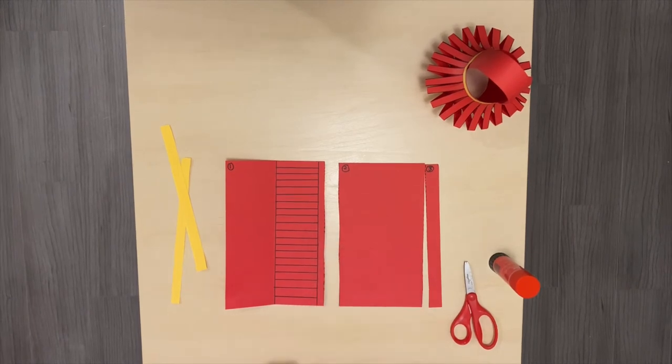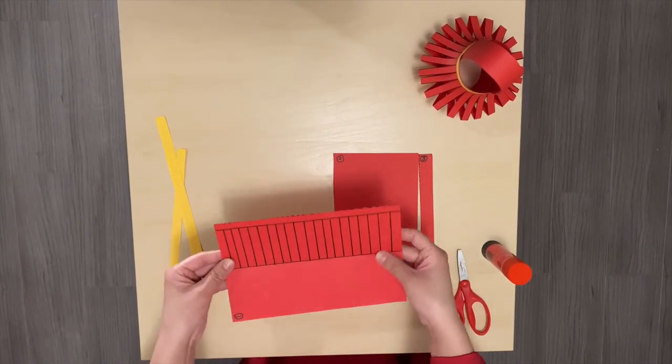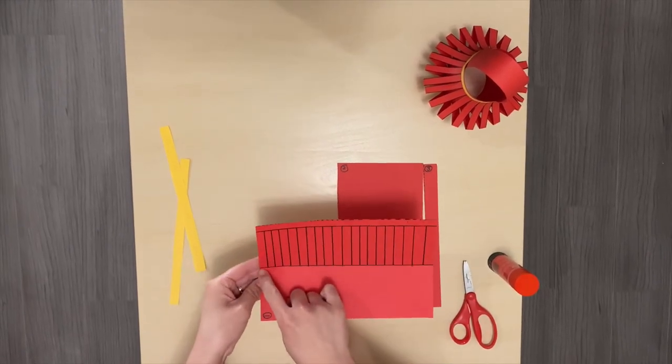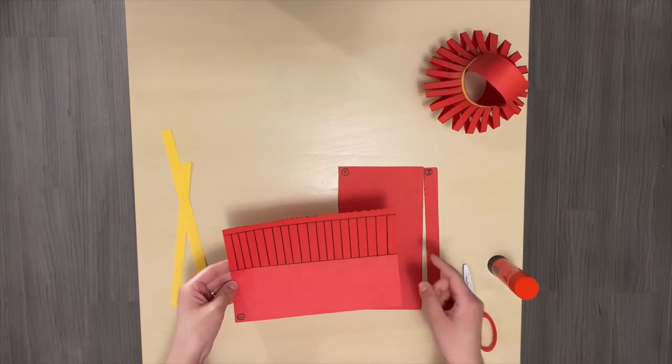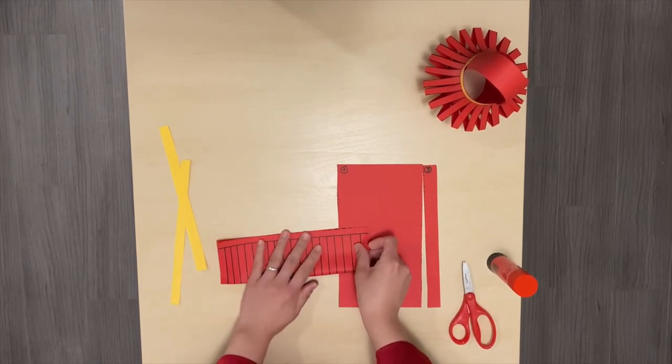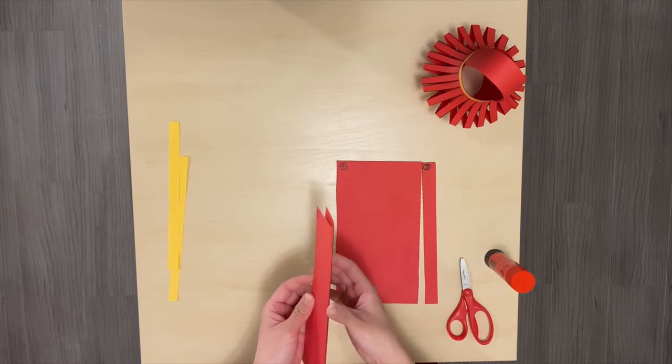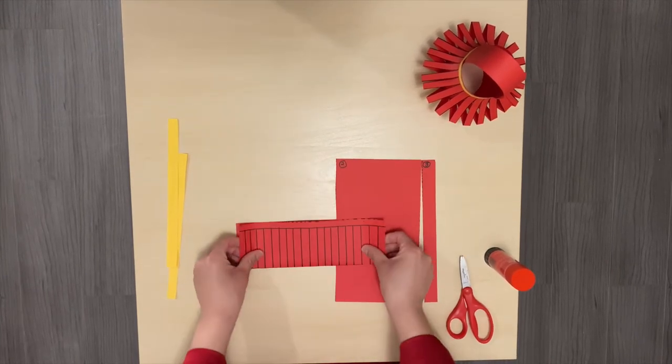Step number two. Pick up your part one and put it horizontally, so you see the straight line in the middle. I want you to fold it in half, following this black straight line.